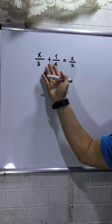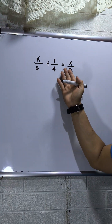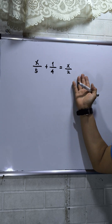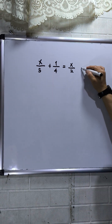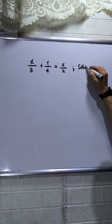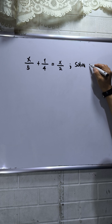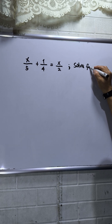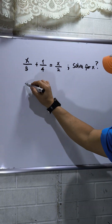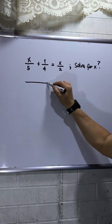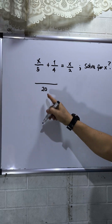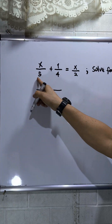We have x over 5 plus 1 over 4 is equal to x over 2. My task here is to solve for the value of x. So the LCD on the left side will be 20. 20 divided by 5